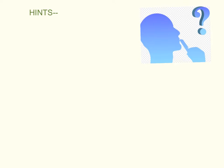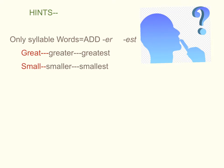Here are some hints to help you determine what to add at the end of the word. For most one-syllable words, you can just add -er and -est. Example: great, greater, greatest. Or small, smaller, smallest.